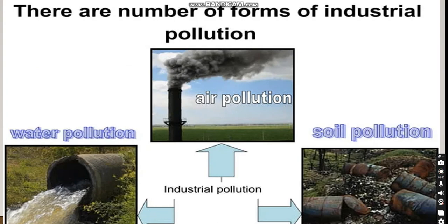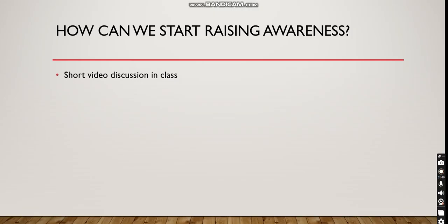There are a number of forms of industrial pollution. We're going to speak about air pollution, water pollution, and soil pollution — the three pollutions that we have on screen. We're also going to have a short video discussion in class about how we can raise awareness of industrial pollution, doing different types of logos and chit-chatting in class.